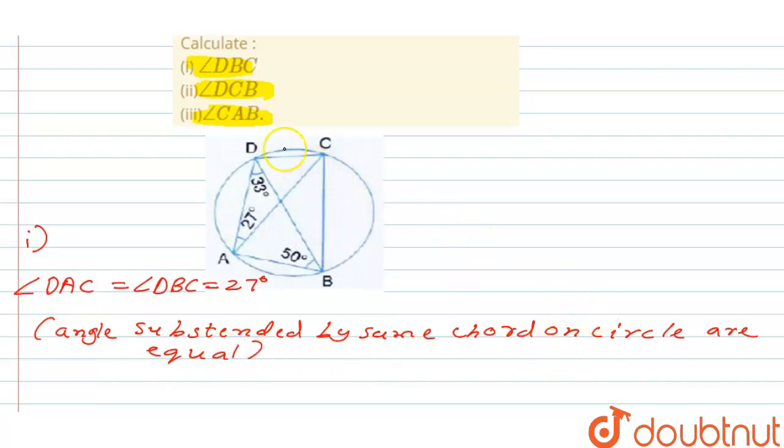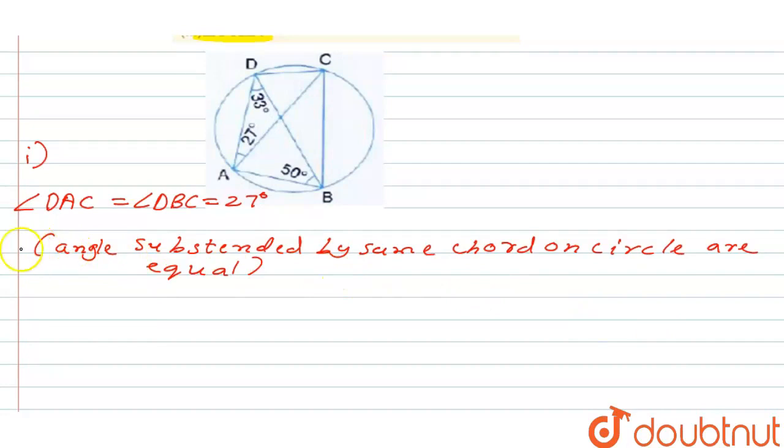Now the second is DCB, so we have to find DCB. So to find DCB, first of all, as we know that angle ACB is equal to angle ADB.